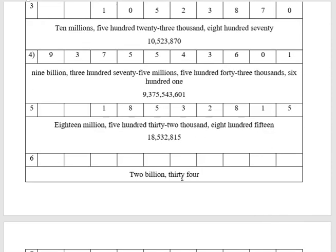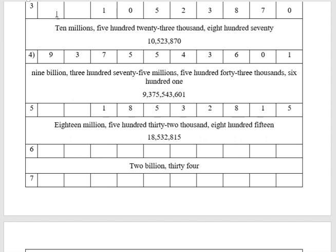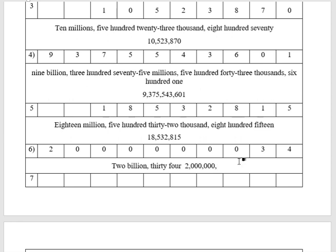What if you had something like two billion thirty-four? That's a little tricky. Two billion puts me in the billions place. Then thirty-four means I don't have any millions or thousands — the only thing I have in the ones period is thirty-four. So it's two, comma, nothing in the millions, nothing in the thousands, nothing in the hundreds, just thirty-four. It's okay to have a bunch of zeros in there — we'd write that number as 2,000,000,034.